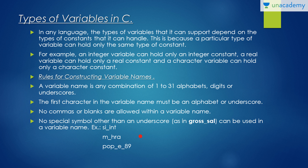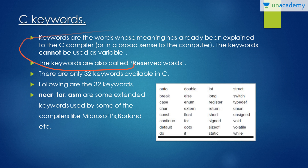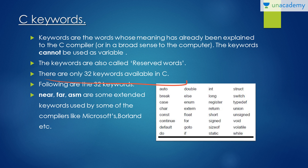Now let's move ahead and see C keywords. Keywords are words whose meaning has already been explained to the C compiler — the programmer does not need to explain them as they are always stored in the compiler or IDE. A keyword cannot be used as a variable name; if you do so an error will occur. Keywords are also called reserved words since they are already stored in the memory of the software. There are only 32 keywords available in C programming, and we will be discussing them one by one in our upcoming sessions.